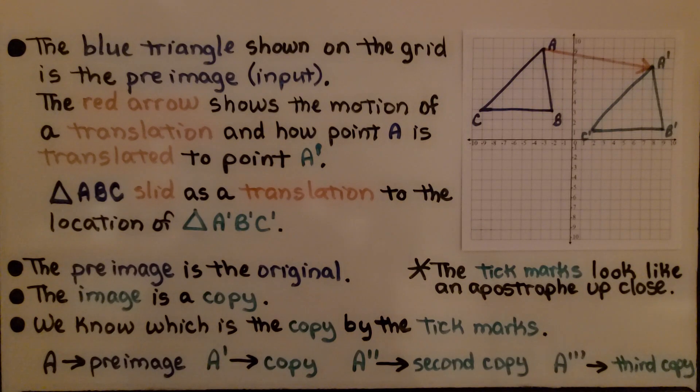We know which is the copy by the tick marks. A is the original, the pre-image, and A prime is a copy.